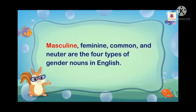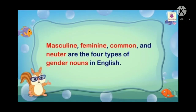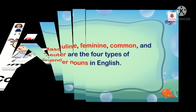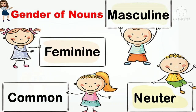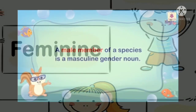The gender is divided into four types: masculine, feminine, common, and neuter. These are the four types of the gender nouns in English. Now we will see one by one, children: masculine, feminine, common, and neuter.